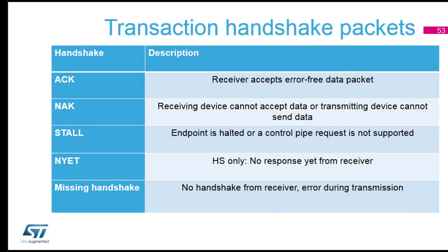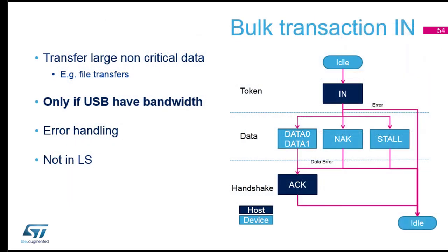Now let's define a transaction. Transactions are always organized as: token, then data, then handshake. For a bulk IN transaction — file transfer not available in low speed — first the host sends a token on the bus with the address and endpoint. The device receives it and puts the data on the bus — first DATA0. Then the host sends an ACK to say it received the packet. The device could also respond NAK — meaning it's not ready — or STALL, meaning it doesn't support this kind of transfer.